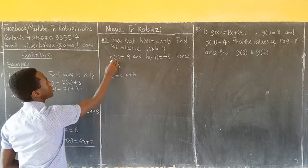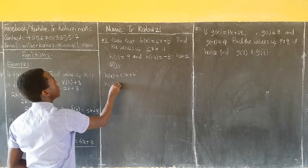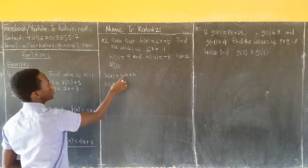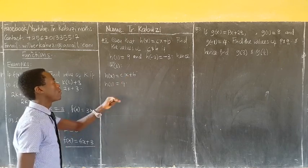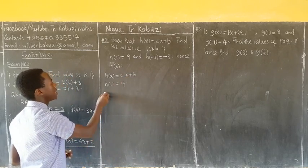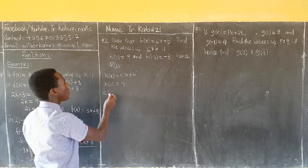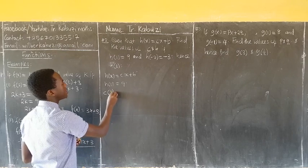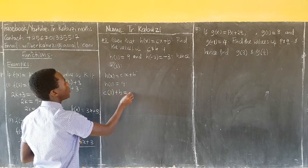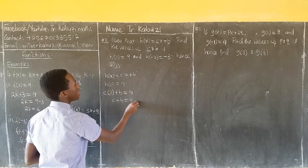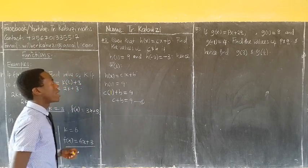So first of all, they are giving us that H of 1 is 9. So where I put, where is x I put in 1, the answer will be 9. So meaning that, my C times 2, where there is x I put 1 in brackets, plus B, the answer will be 9. This will be C plus B equaling to 9, and that is equation 1.